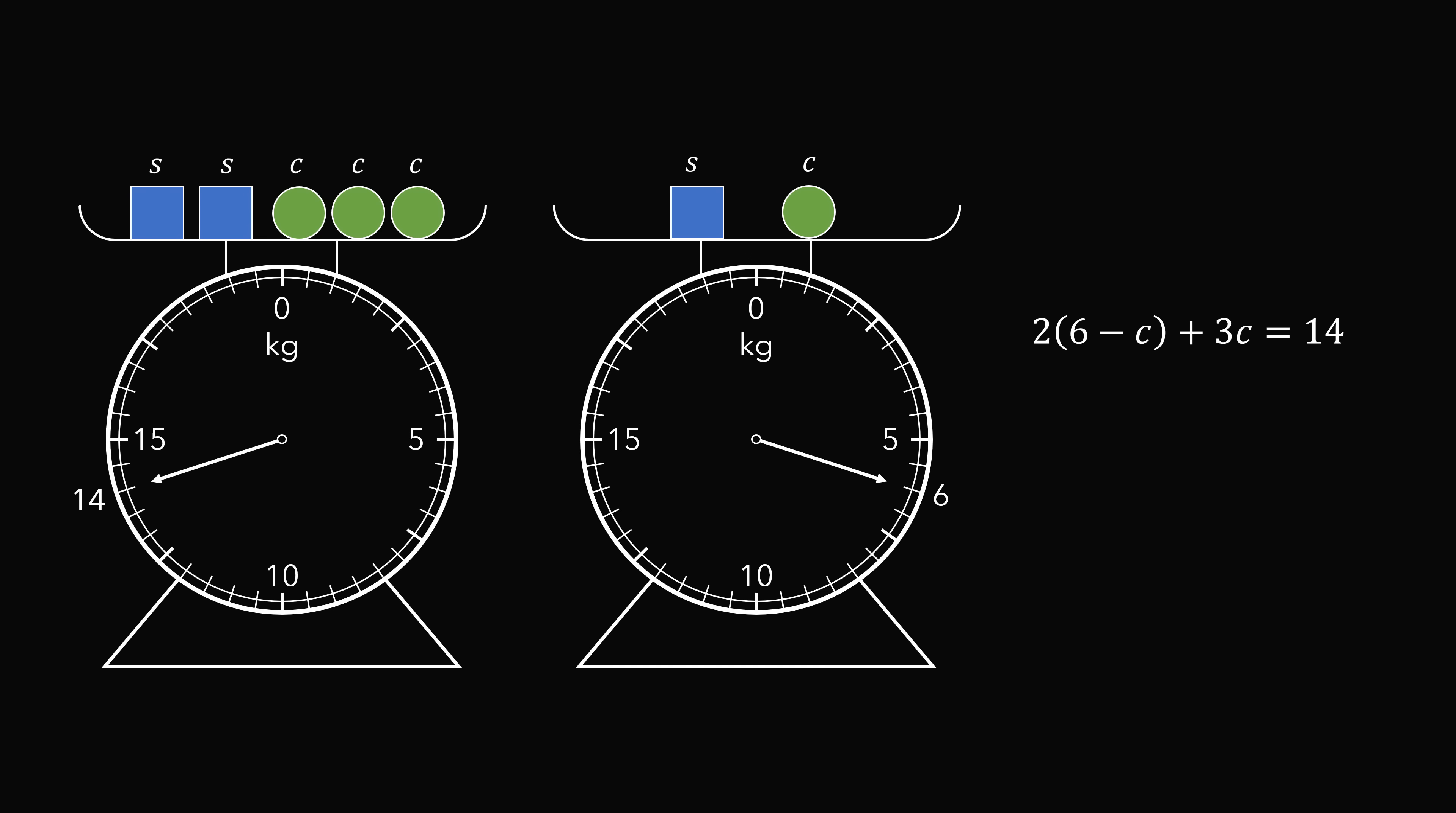So we have 2 multiplied by the quantity 6 minus c plus 3c equals 14. Focus on this equation. We want to distribute the 2. So we have 2 multiplied by 6, which equals 12, and then 2 multiplied by negative c, which equals minus 2c.